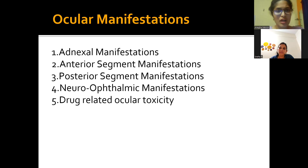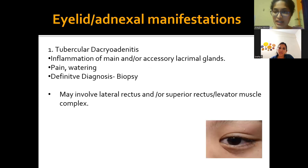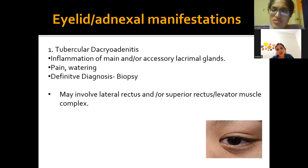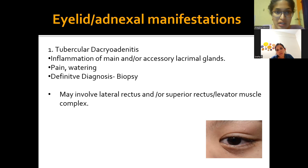Moving to proper ocular manifestations: adnexal, anterior segment, posterior segment, neuro-ophthalmic, and drug-related ophthalmotoxicity. Starting with eyelid and adnexal manifestations — this is very misleading because in a normal ophthalmology OPD, tuberculosis is the last thing we think of when a patient presents with eyelid swelling. We typically consider bacterial or viral infection, or even malignancy, before TB.